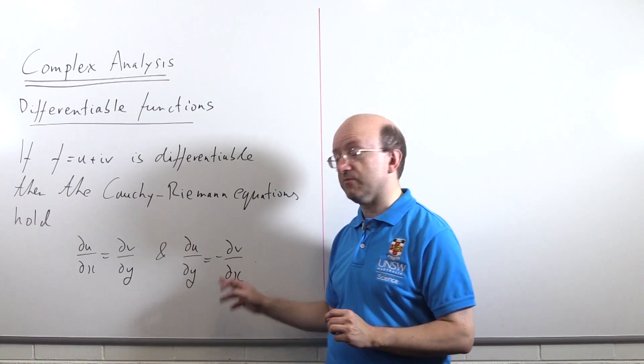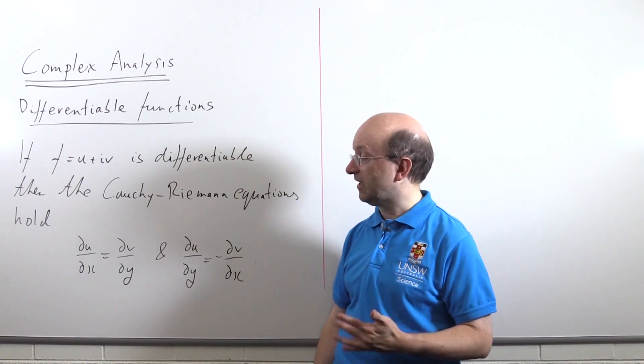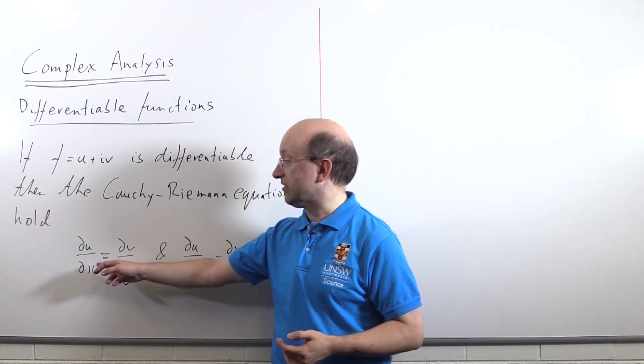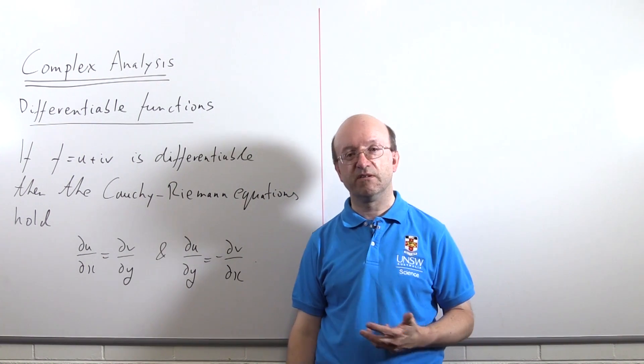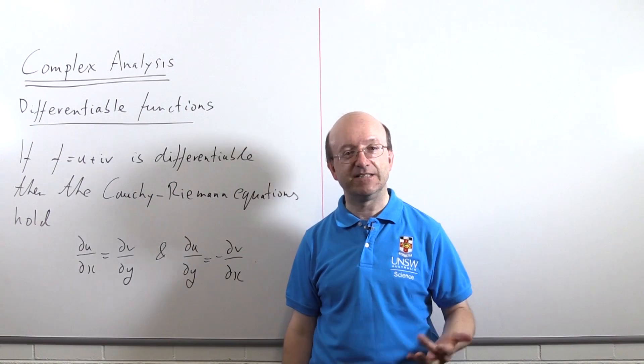There can be points where the Cauchy-Riemann equation is satisfied, but the function is not differentiable. However, if all these partial derivatives are continuous and the Cauchy-Riemann equation is satisfied, then f is differentiable.